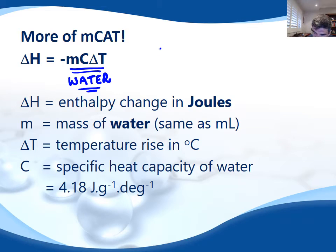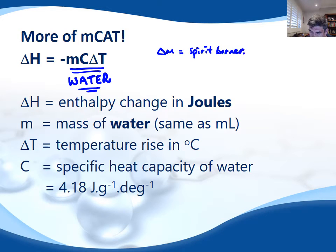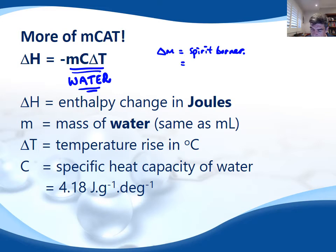You'll know that we have a change in mass associated with the spirit burner, and that's what we get as the difference between when we weigh the burner before the experiment and when we weigh it again after we've burnt the fuel. That gives us a mass of fuel — which is our alcohol in this case.